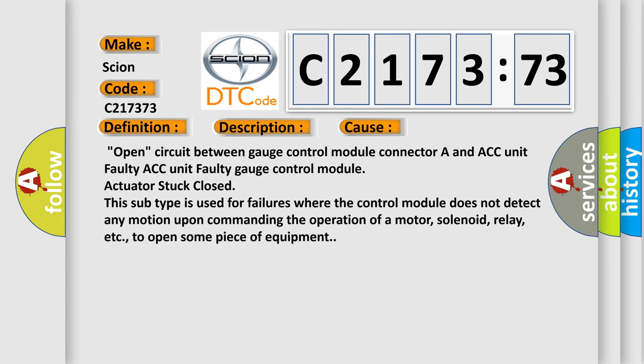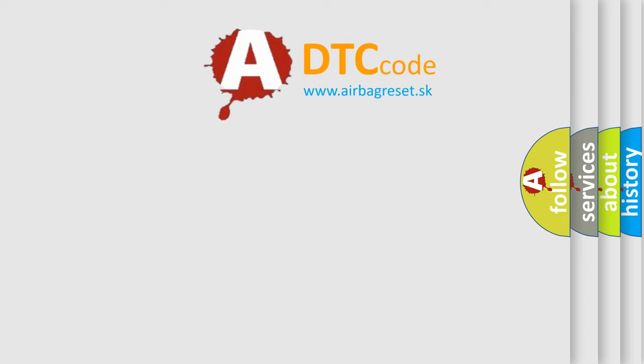This diagnostic error occurs most often in these cases: open circuit between gauge control module connector A and ACC unit, faulty ACC unit, faulty gauge control module, actuator stuck closed. This subtype is used for failures where the control module does not detect any motion upon commanding the operation of a motor, solenoid, relay, etc., to open some piece of equipment.